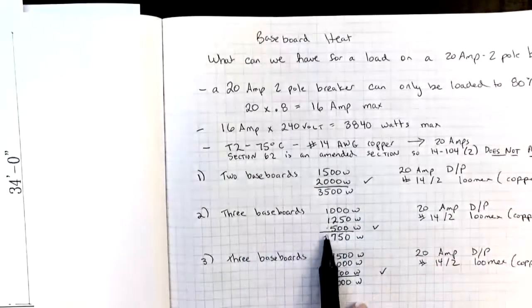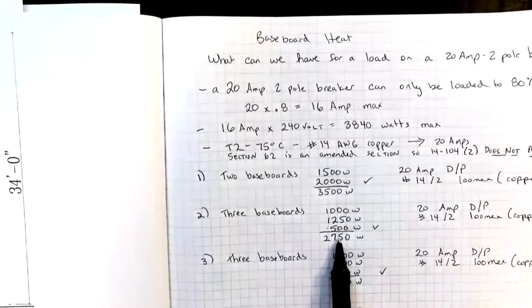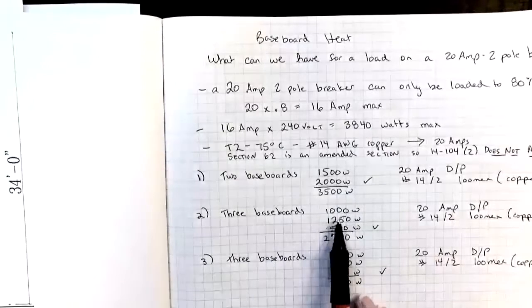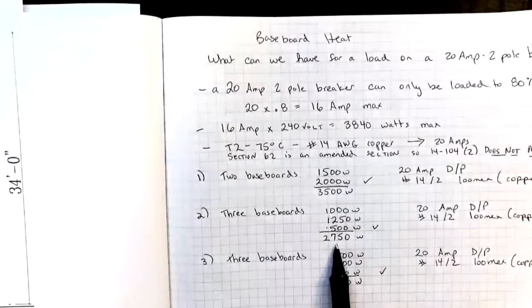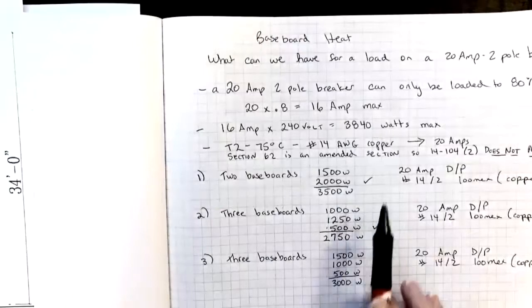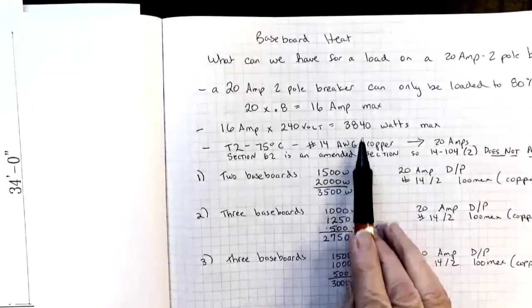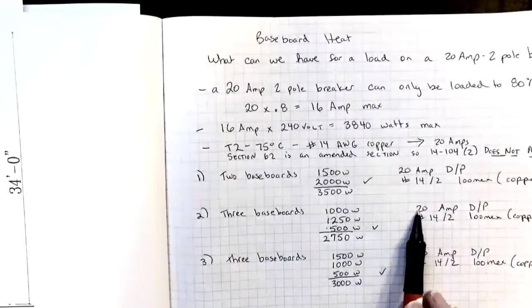I have three baseboards on this next circuit, and these are in the kitchen area in the nook. So 1000 watt, 1250, and a 500 adds up to 2750. Also fits within our maximum of 3840. So we can use 20 amp double pole breaker. And again, a 14-2 Lumex.